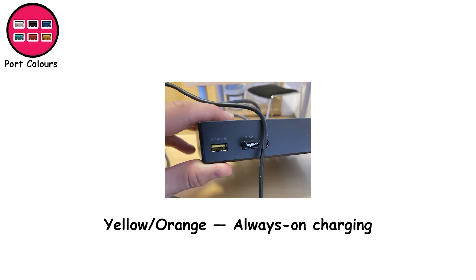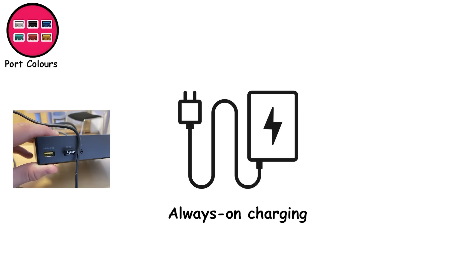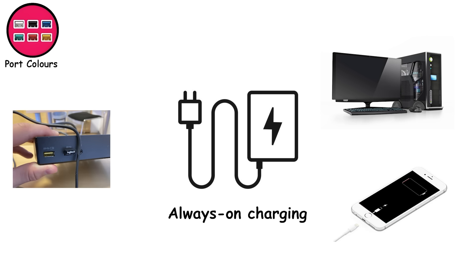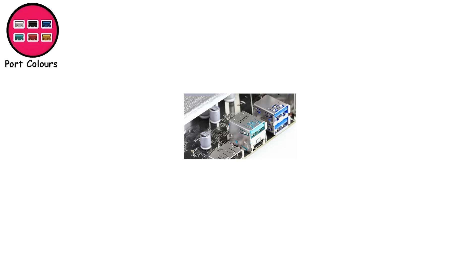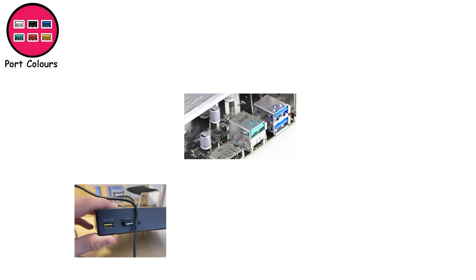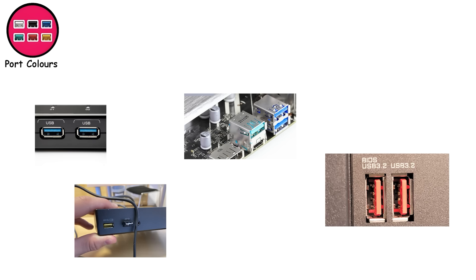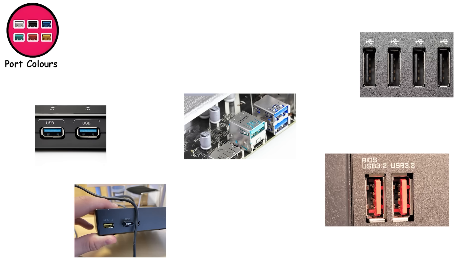Yellow or orange ports are always-on charging ports — they stay powered even when the computer is off or asleep, perfect for charging your phone overnight without keeping your whole PC running. Colors won't solve every USB mystery, but at least you know which ports are built for speed and which ones are just along for the ride.